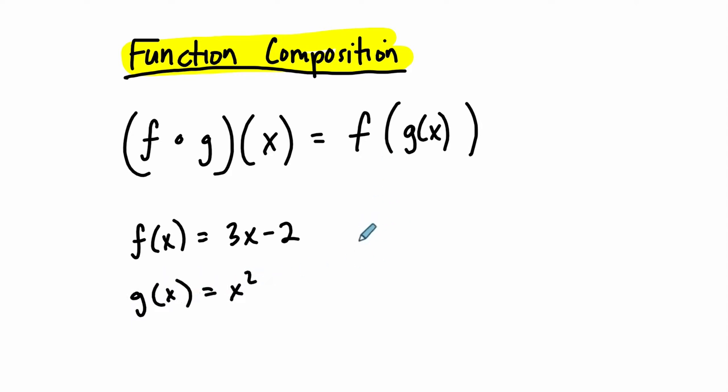You get some interesting things. If I said what is f composed of g of x, it would be f with an input of x squared, and then you get 3 times x. That's where your input goes, 3x squared. I'm inputting x squared as the input. Before x was the input, it goes here, now x squared goes there, minus 2.